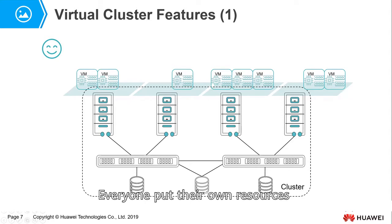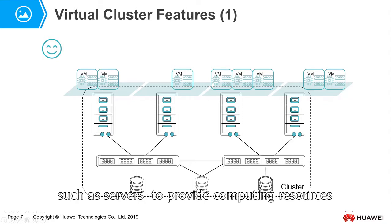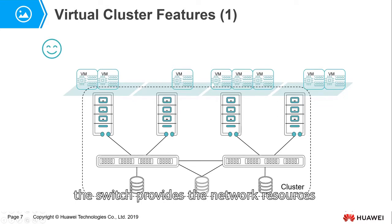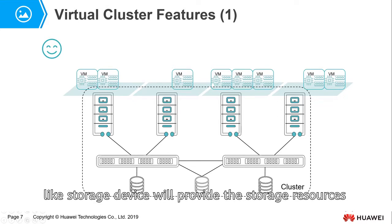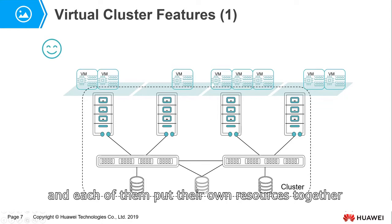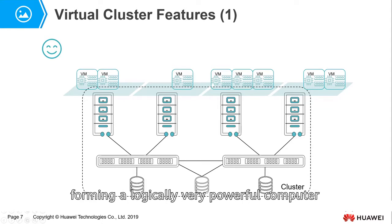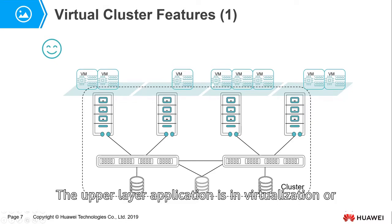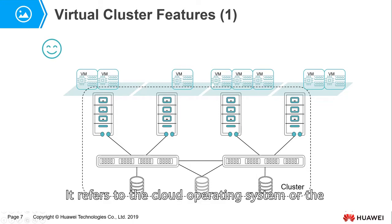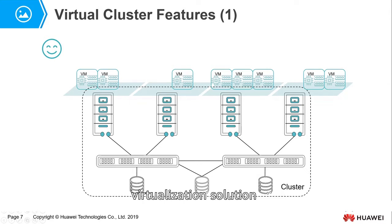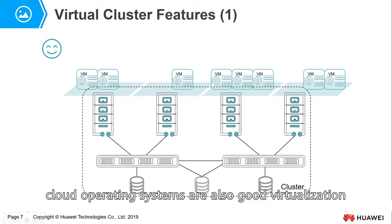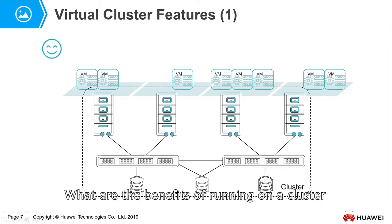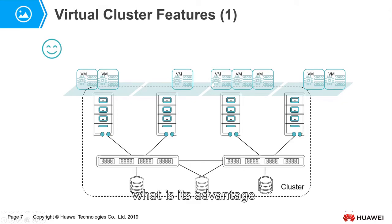Everyone puts their own resources, such as servers, to provide computing resources. The switch provides the network resources, and storage devices provide the storage resources. Each of them puts their own resources together, forming a logically very powerful computer which provides hardware resources to the upper layer. The upper layer application, in virtualization or cloud computing, refers to the cloud operating system or the virtualization solution. What are the benefits of running on a cluster compared with running on a single server?